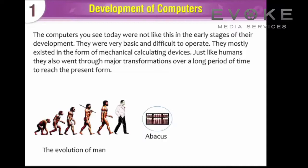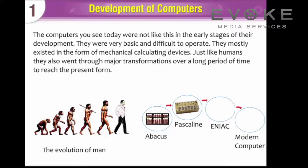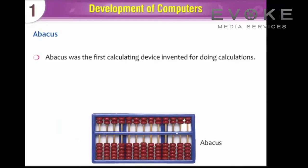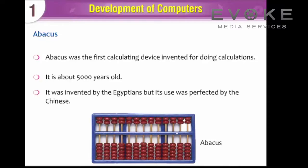The evolution of the computer: Abacus. The abacus was the first calculating device invented for doing calculations. It is about five thousand years old. It was invented by the Egyptians, but its use was perfected by the Chinese.